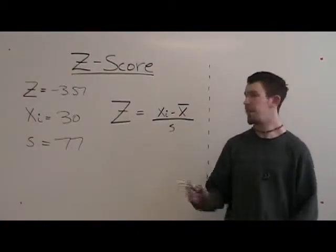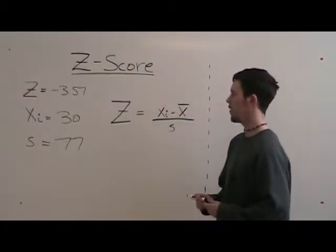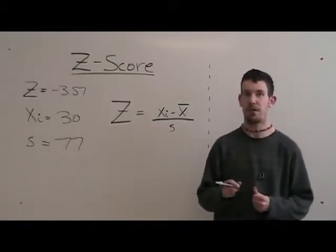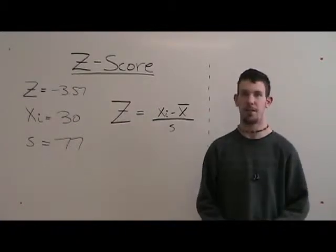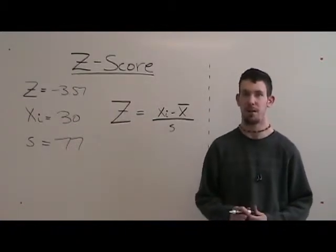In this second example, the z-score is negative 3.57, the xi is 30, and the standard deviation is 7.7.